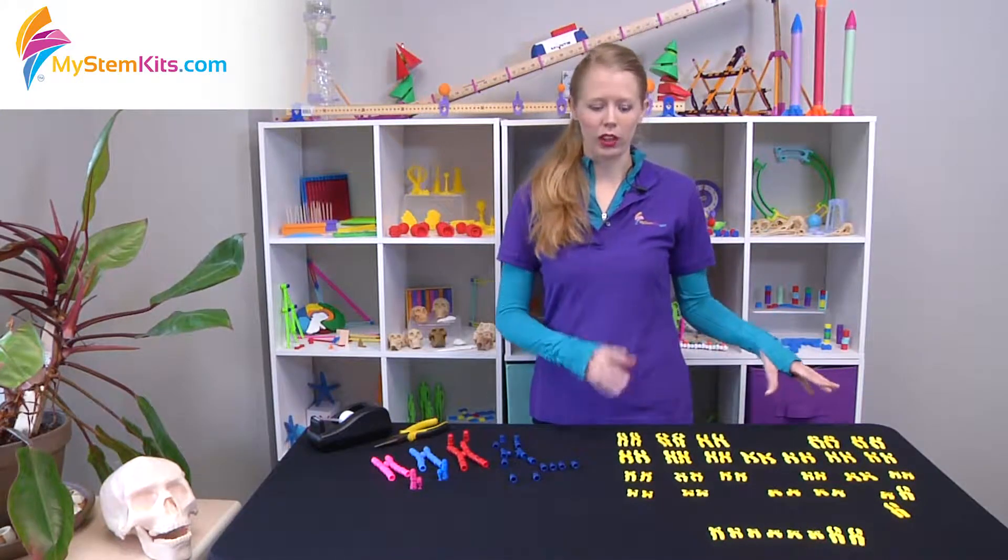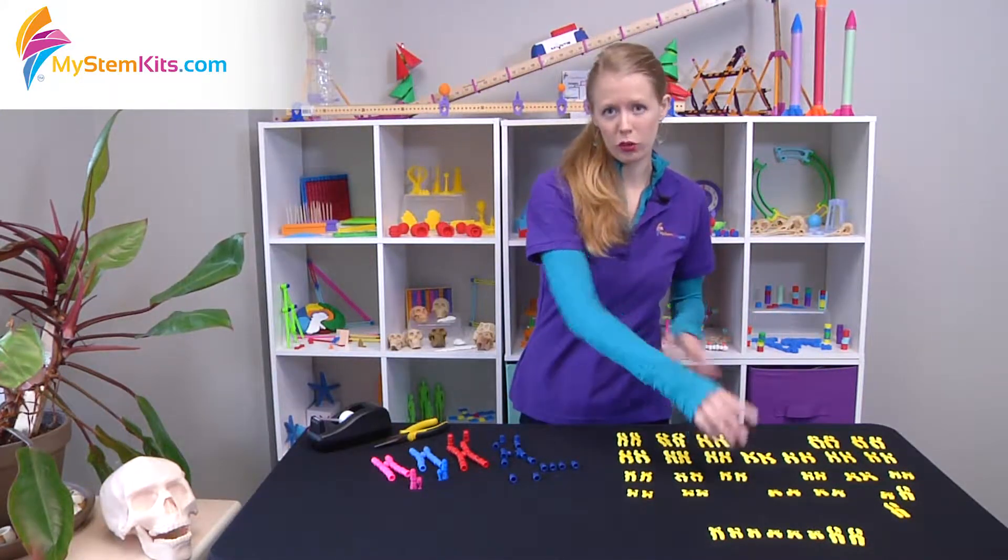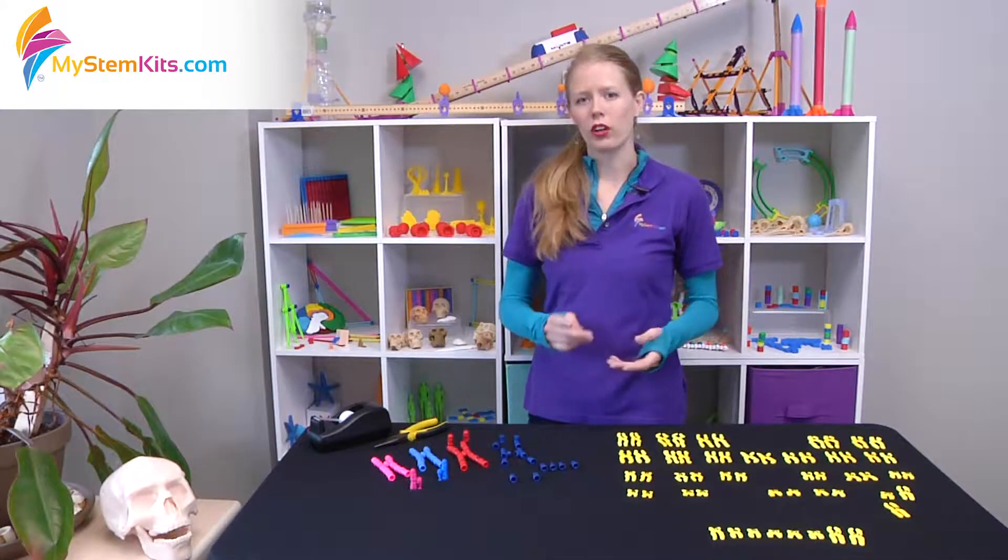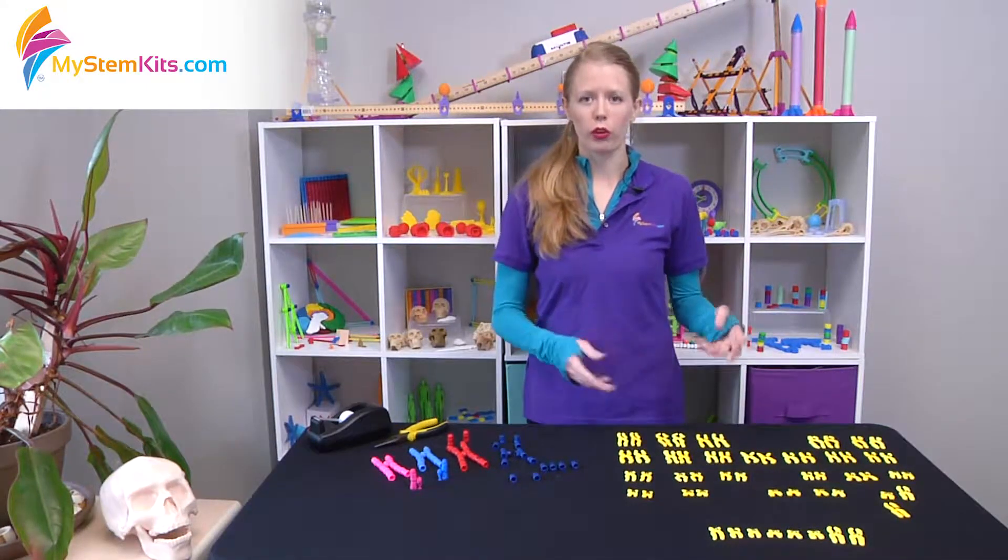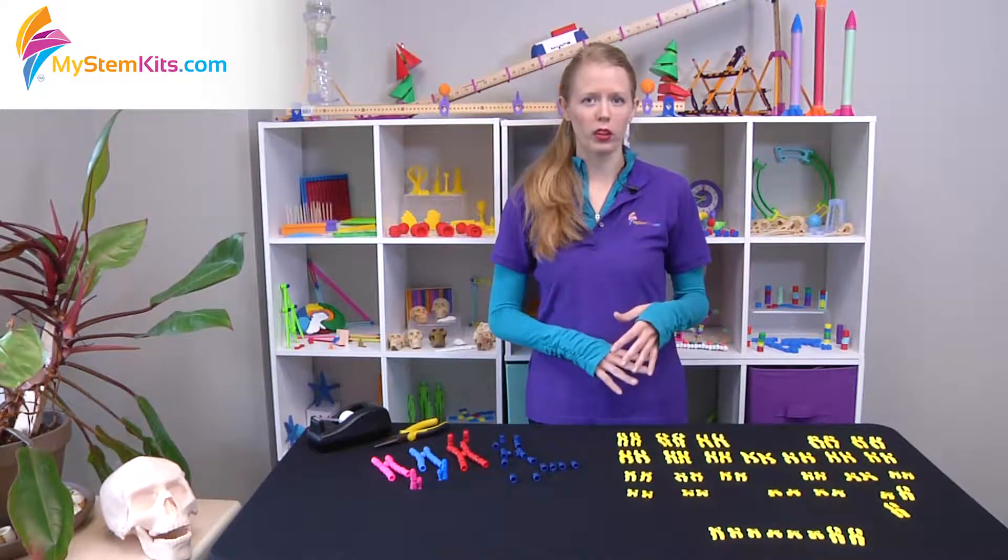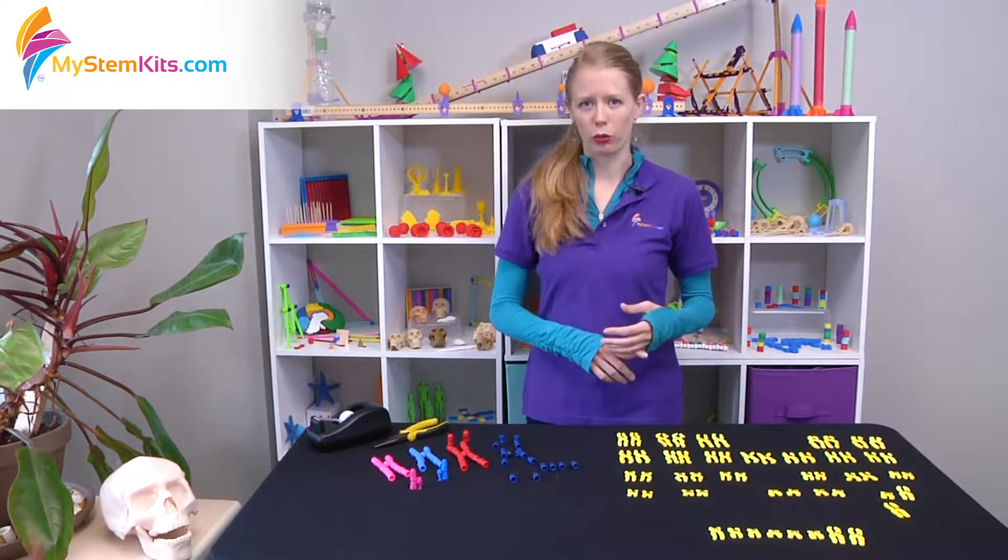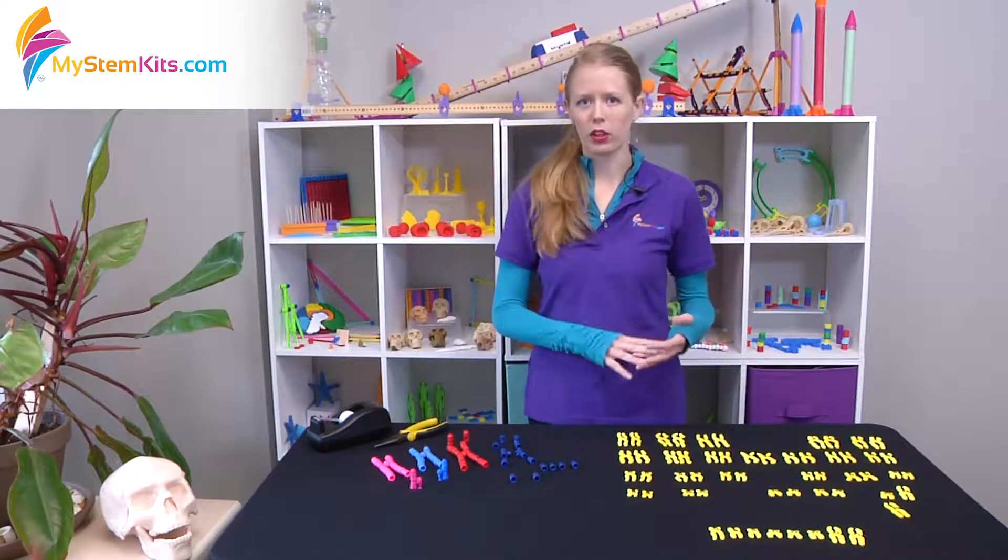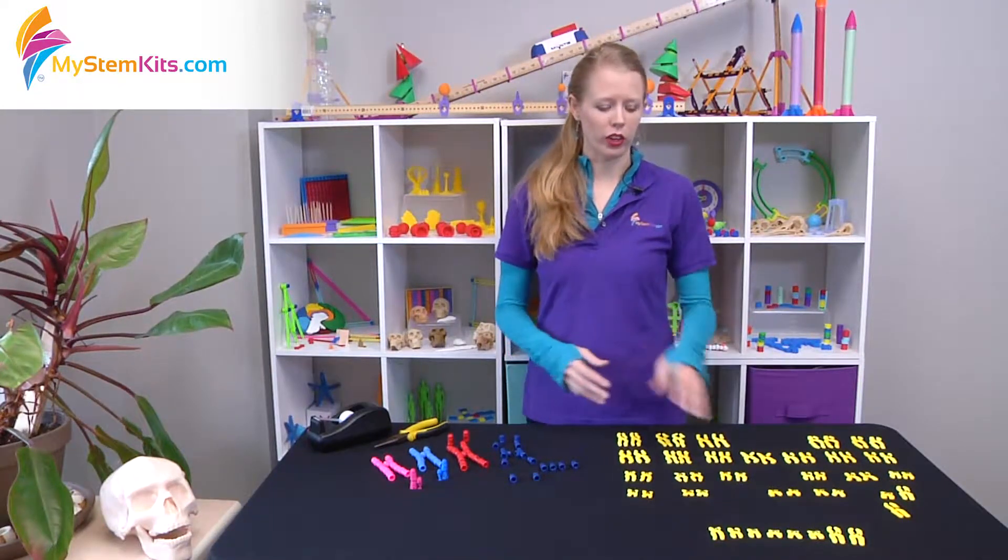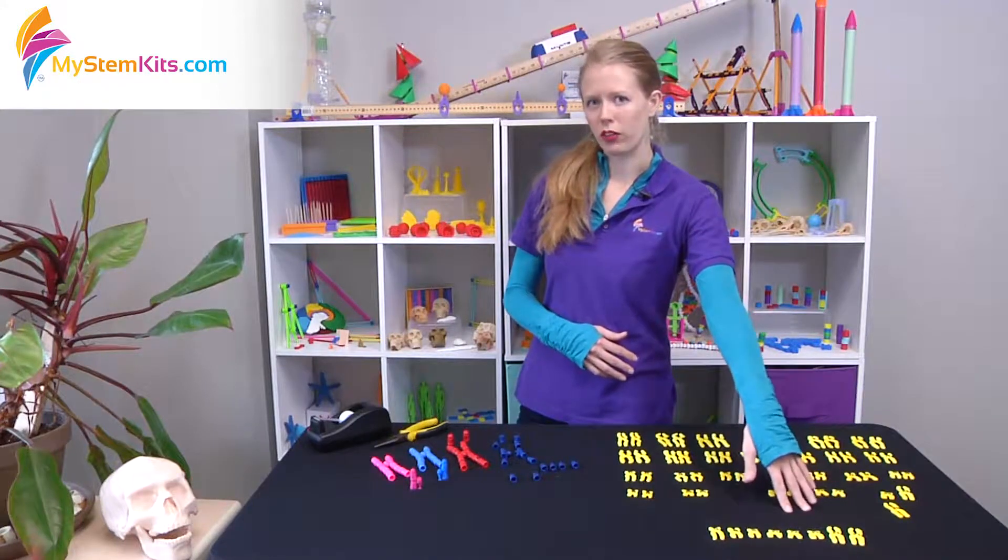Then with our karyotypes kit and our aneuploidy expansion to it we have the option to discuss the genetic variation between related individuals. You can do so through looking at random assortment and independent segregation of chromosomes and then you can even get into some of the mistakes that happen during meiosis that result in aneuploidy birth defects.